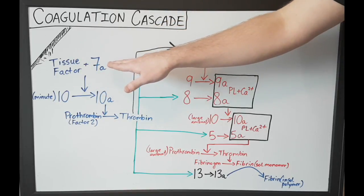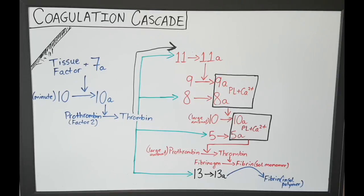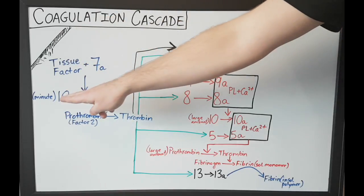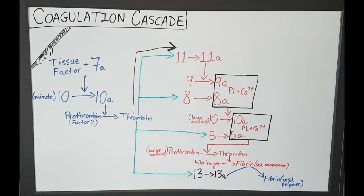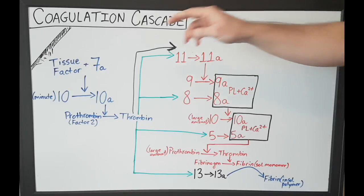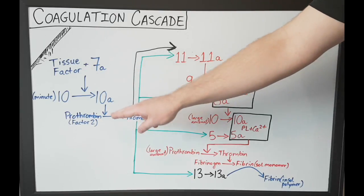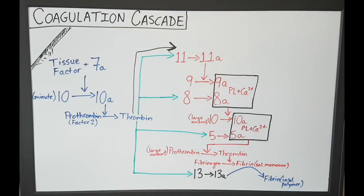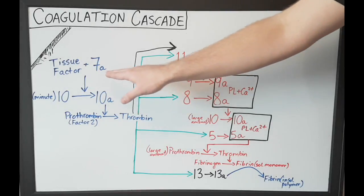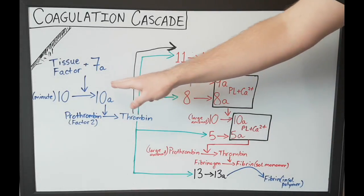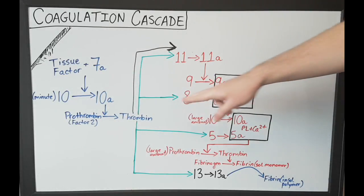So once you get tissue factor and activated lucky number 7, these two are going to actually activate minute amounts of factor 10 to minute amounts of activated factor 10. That's a very key point to remember — minute amounts. Once you have minute amounts of activated factor 10, this factor 10 is going to activate minute amounts of prothrombin to thrombin. Another name for prothrombin is actually factor 2, so activated factor 10 — minute amounts — activates small amounts of prothrombin to thrombin.